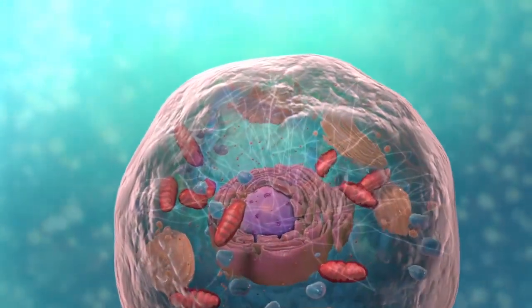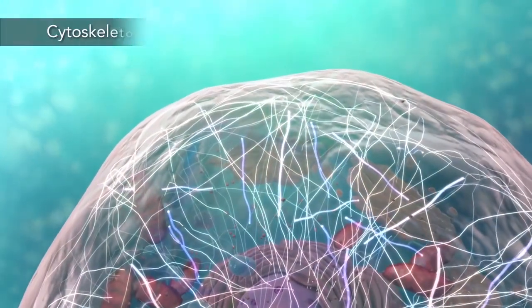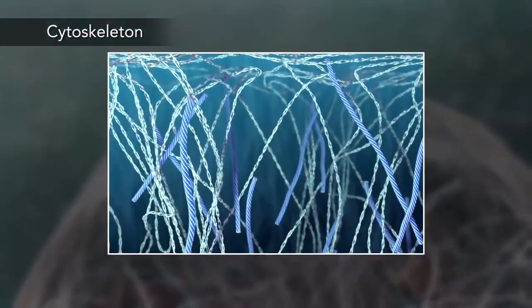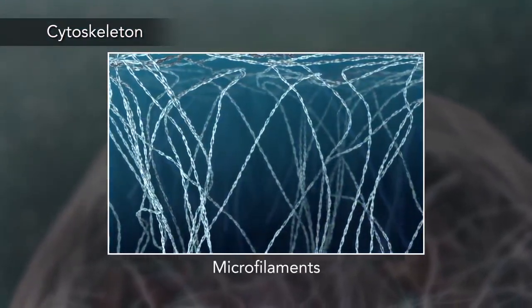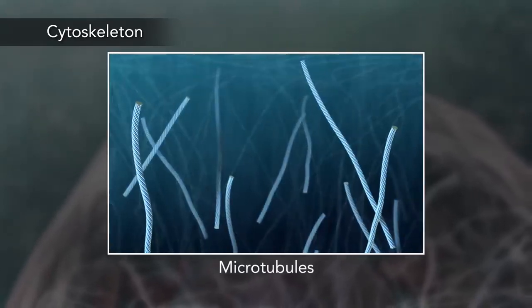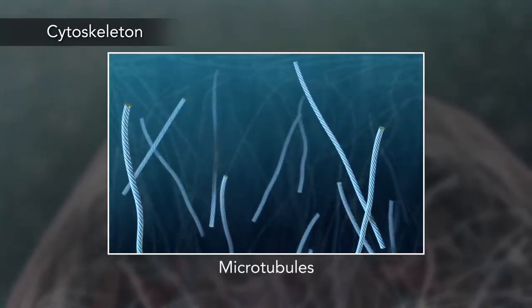Meanwhile, the cell maintains its shape through a cytoskeleton. The cytoskeleton includes the thread-like microfilaments, which are made of protein, and microtubules, which are thin, hollow tubes.